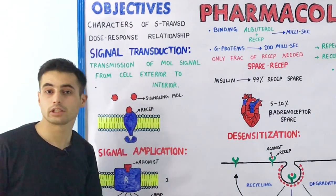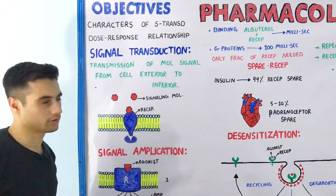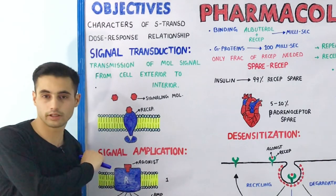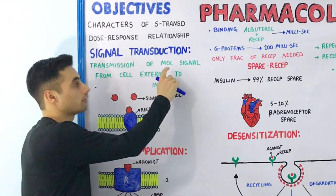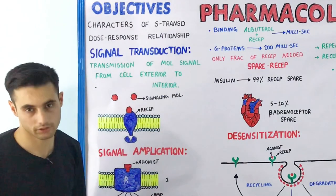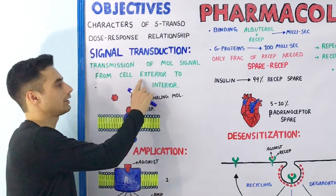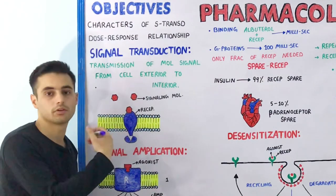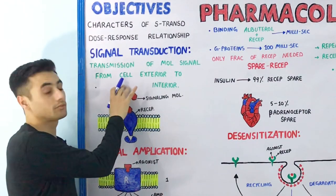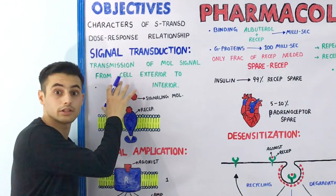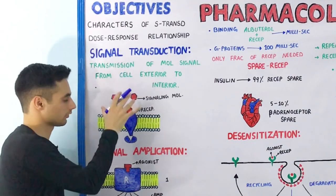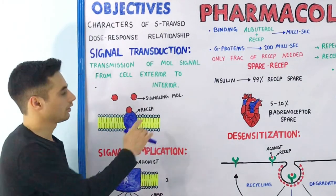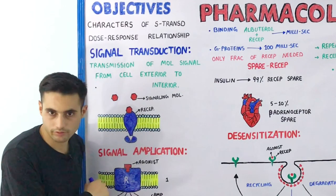First of all, what is signal transduction? Signal transduction, in very simple and easy words, is defined as the transmission of a molecular signal from the cell exterior to the cell interior. Have a look at this diagram — the signal is being transmitted from outside the cell to the interior by using a signaling molecule and the receptor.